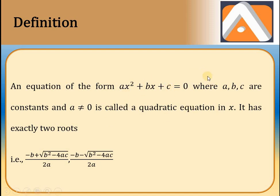In higher-level problems, you will put complex numbers as well. A, B, C are three constants, and especially you need to remember that A is called the leading coefficient. For any polynomial of order n, the coefficient of the highest power x^n is called the leading coefficient, and that should not be equal to 0. If it becomes 0, it is no longer a quadratic equation — it becomes a linear equation. So the leading coefficient should not be equal to 0.